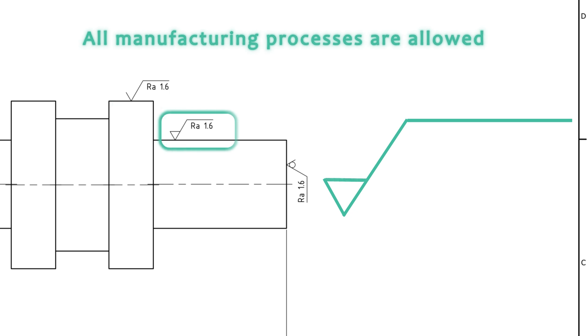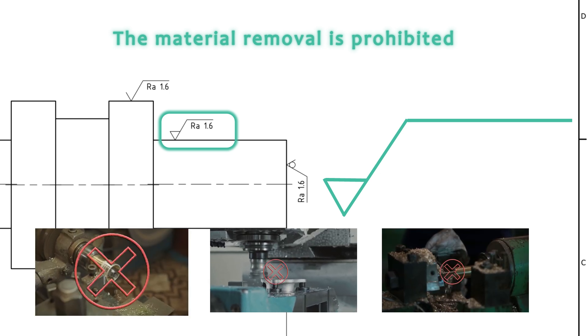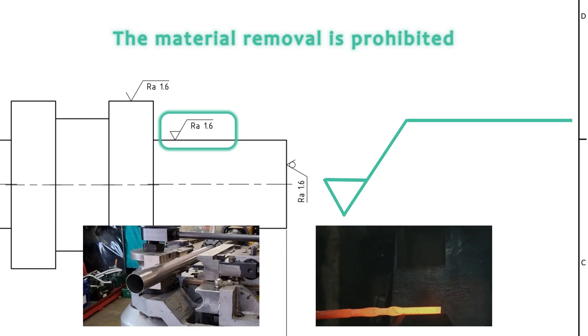This symbol says that material removal is prohibited. So, the indicated surface cannot be manufactured by removing material. So, processes like turning, milling, and drilling are not allowed on that surface. But processes like rolling and forging are allowed.